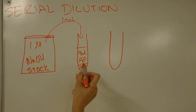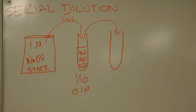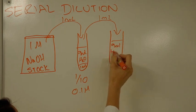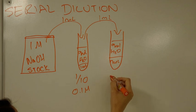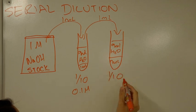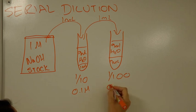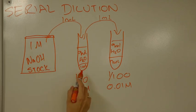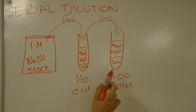With a serial dilution, we then take from the first dilution to make a second dilution. So again, nine mils of water and one mil from the first dilution gives another one-in-ten. That means in total it's a one-in-a-hundred dilution, giving a 0.01 molar solution. So serial dilution means making each new dilution from the previous dilution, not from the original stock.